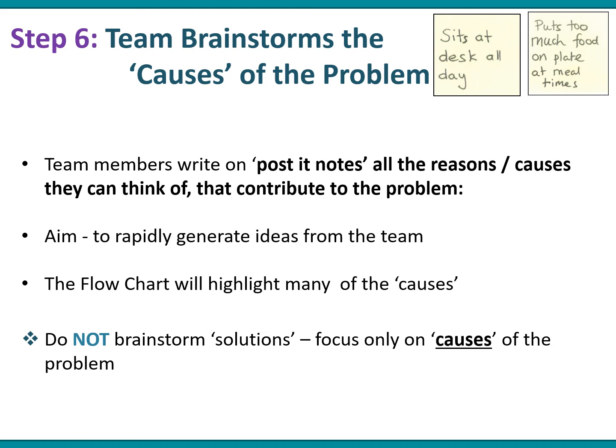Step six is where the team brainstorms all the causes of the problem. We do this by using post-it notes and writing down all the reasons and causes that people can think of that contribute to the problem. The flowchart will often help you think about some of the causes, but make sure you don't brainstorm solutions — focus in on the causes of the problem.